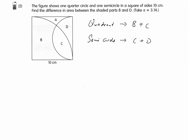If you want to find the difference between B and D, okay, don't you think that it's actually the quadrant minus the semicircle? Because the C will cancel each other out, right? Correct? B plus C, C plus D. You want to find the difference between B and D, the C will cancel out, yes or no? If you use the area of the quadrant minus the area of the semicircle.